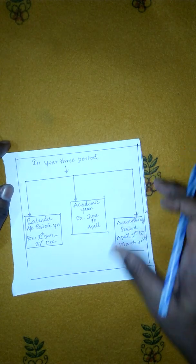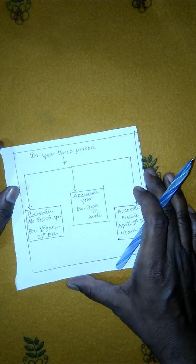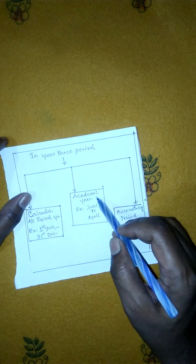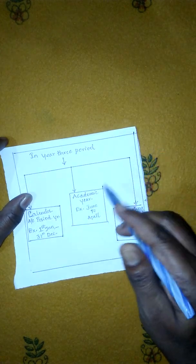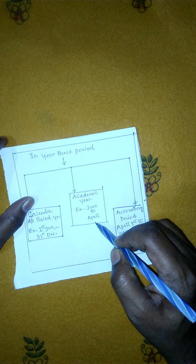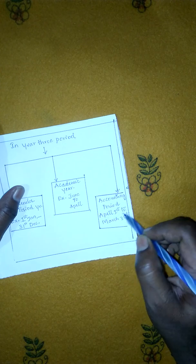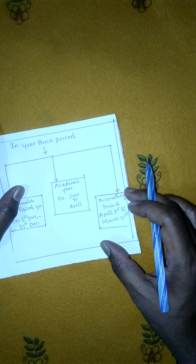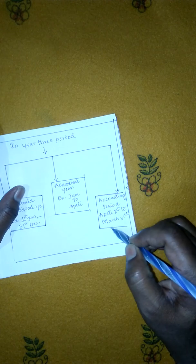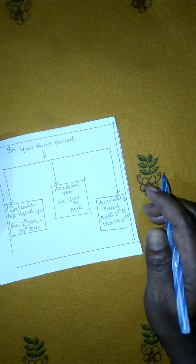There are three types of periods. First, the calendar year — for example, 1st January to 31st December. Second, the academic year — mostly followed by institutions, colleges, and schools, running from June to April. Third, the accounting period — 1st April to 31st March — which every business organization follows for account preparation.